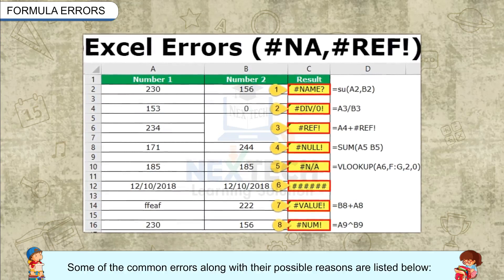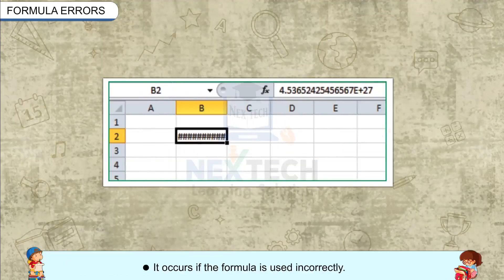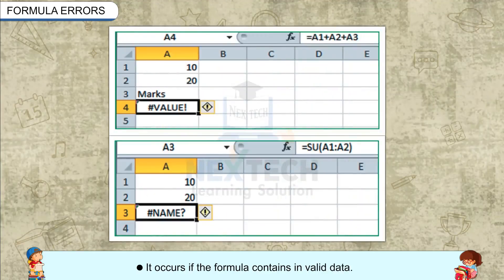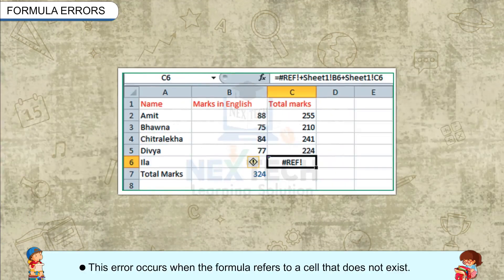Some of the common errors along with their possible reasons are listed below. It occurs if the formula is used incorrectly. It occurs if the formula contains invalid data. This error occurs if the number is divided by zero.